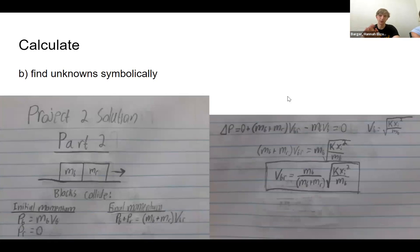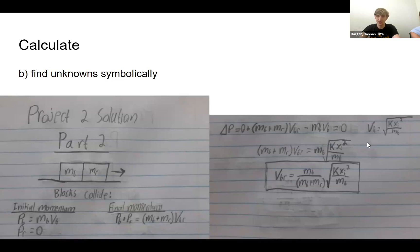Knowing that velocity, we move to part two: the collision, using momentum analysis. The initial momentum is the mass of the blue block times its velocity, plus the momentum of the red block, which is zero. The final momentum is the combined mass of the blue and red blocks times their shared velocity. Using conservation of momentum, we set them equal and plug in the blue block's velocity from part one to get an equation for the velocity of the two combined blocks after the collision.